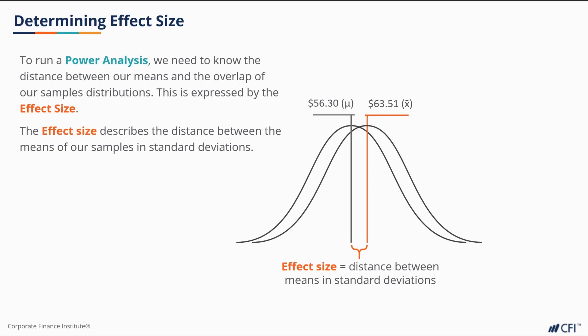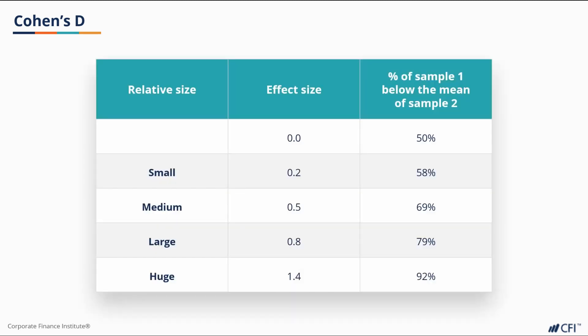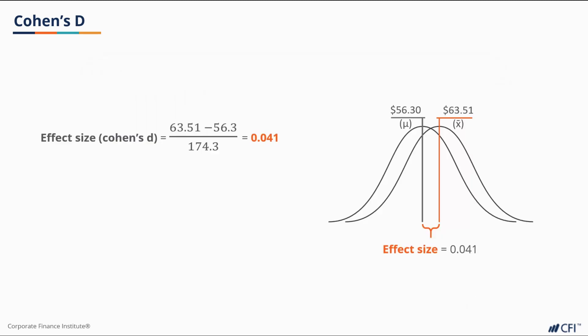Effect size, like with many things in statistics, can be calculated a few ways. We'll be applying the very common method known as Cohen's D. This method works when we have estimates of the mean and standard deviations through prior data or educated guesses. In this case, we have prior data from our samples of 750 visitors. Cohen's D describes the distance between means in standard deviations. A Cohen's D of 1 tells us our means are one standard deviation apart. We consider 0.2 to be a small effect, 0.5 to be a medium effect, and 0.8 to be a large effect. You can also have very large or huge effects as we progress past one standard deviation. To calculate the effect size, you take the difference between the means and divide by the average standard deviation of our samples. Our effect size happens to be quite small due to the large variance of our data set.